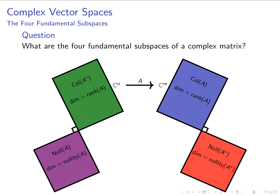Also, our orthogonality relations hold. The column space of the conjugate transpose is the orthogonal complement of the null space, and the column space of the matrix is still the orthogonal complement of the null space of the conjugate transpose.